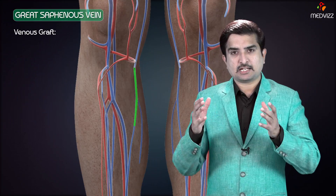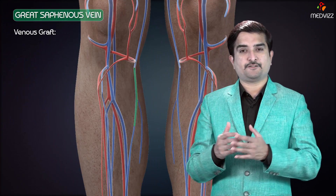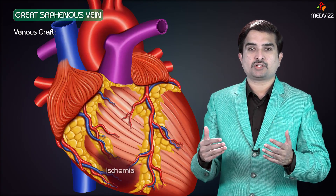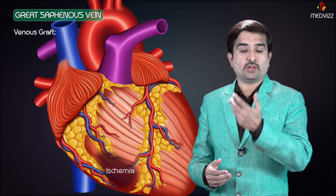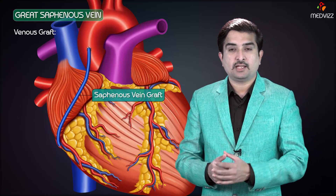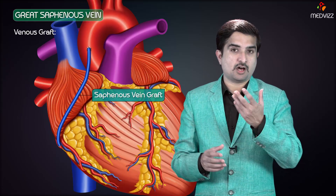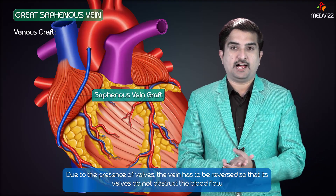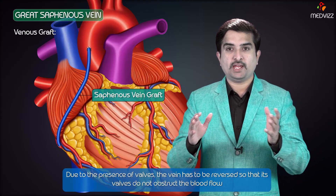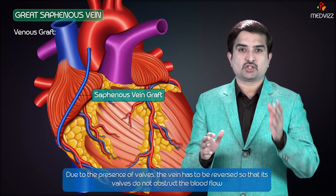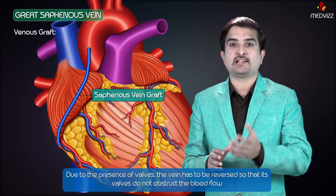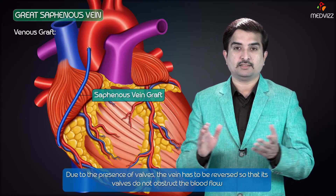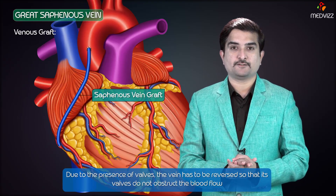Another important clinical use is the vein graft in coronary artery bypass surgery. To relieve ischemia of the myocardium, a segment of the great saphenous vein is sectioned and used for coronary grafting, especially to bypass arterial obstruction. Due to the presence of valves, the vein has to be reversed so that its valves do not obstruct the blood flow.